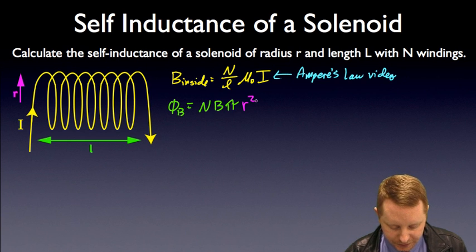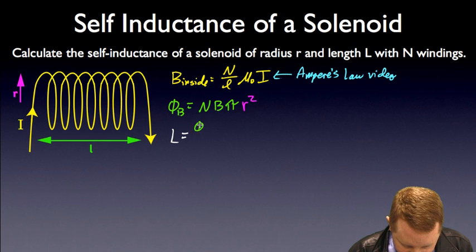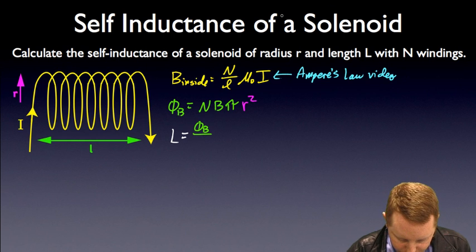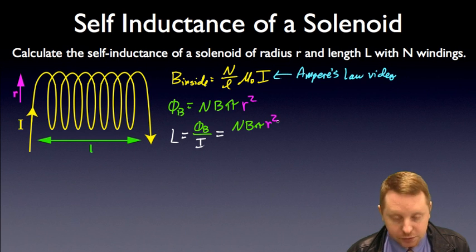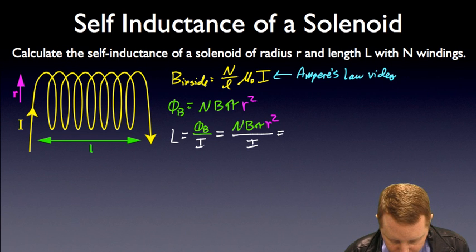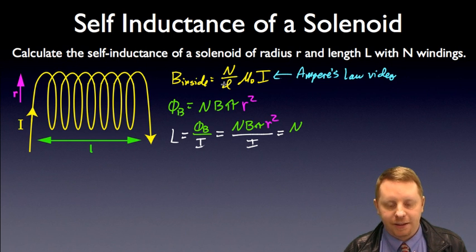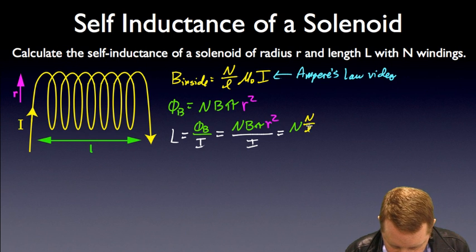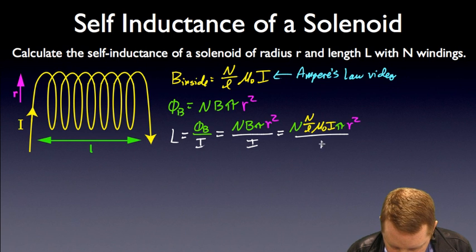So then if we want to know the self-inductance, our self-inductance L is going to be equal to our magnetic flux divided by our current flow. In this case, our magnetic flux phi B we just said was NB pi times R squared, all divided by our current. We have N, and I'm going to replace my magnetic field with what I've already calculated, the magnetic field inside the solenoid: capital N over L, mu-0 I. We still have our pi, we still have R squared, all divided by our current flow.